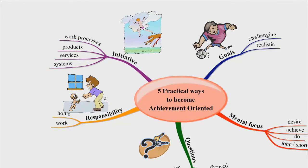Now, let us summarize the five practical ways to become achievement oriented. Number one: set challenging and realistic goals. Number two: mental focus. Number three: questions. Number four: responsibility. Number five: initiative.